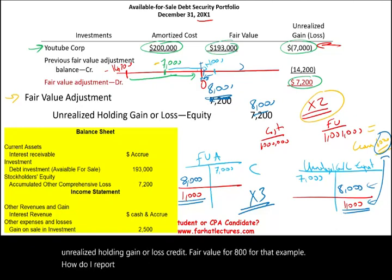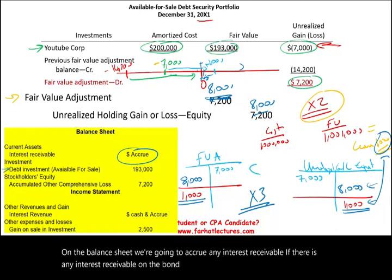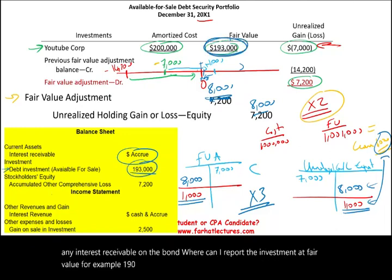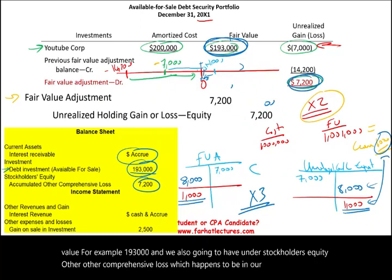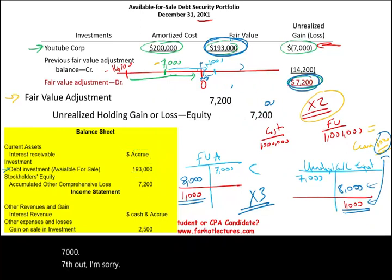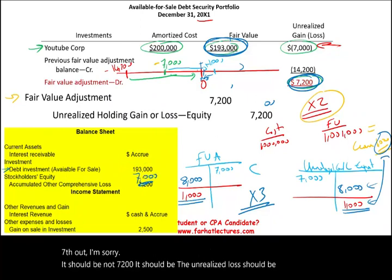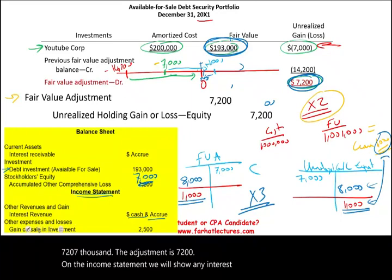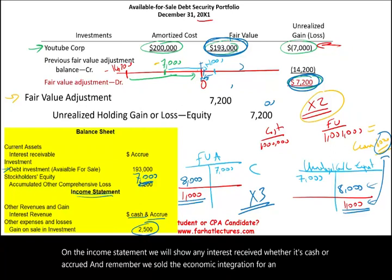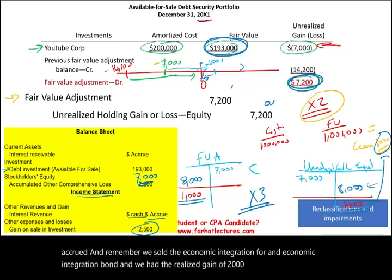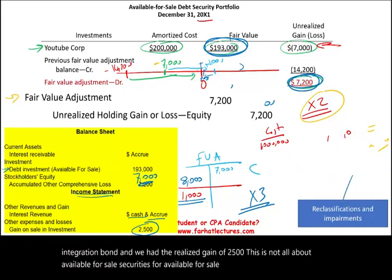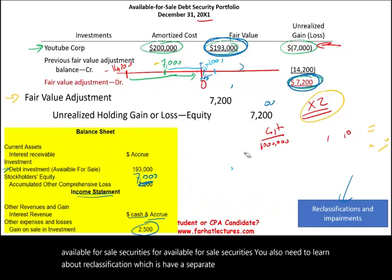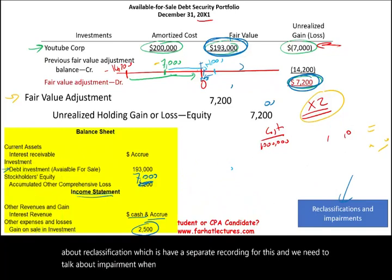On the balance sheet, we accrue any interest receivable, report the investment at fair value — for example $193,000 — and show the other comprehensive loss under stockholders' equity, which in our example is $7,000. On the income statement, we show any interest revenue received or accrued. We also had the realized gain of $2,500 from selling the Economic Integration bond. There is more to available for sale securities, including reclassification adjustments and impairment — covered in separate recordings.